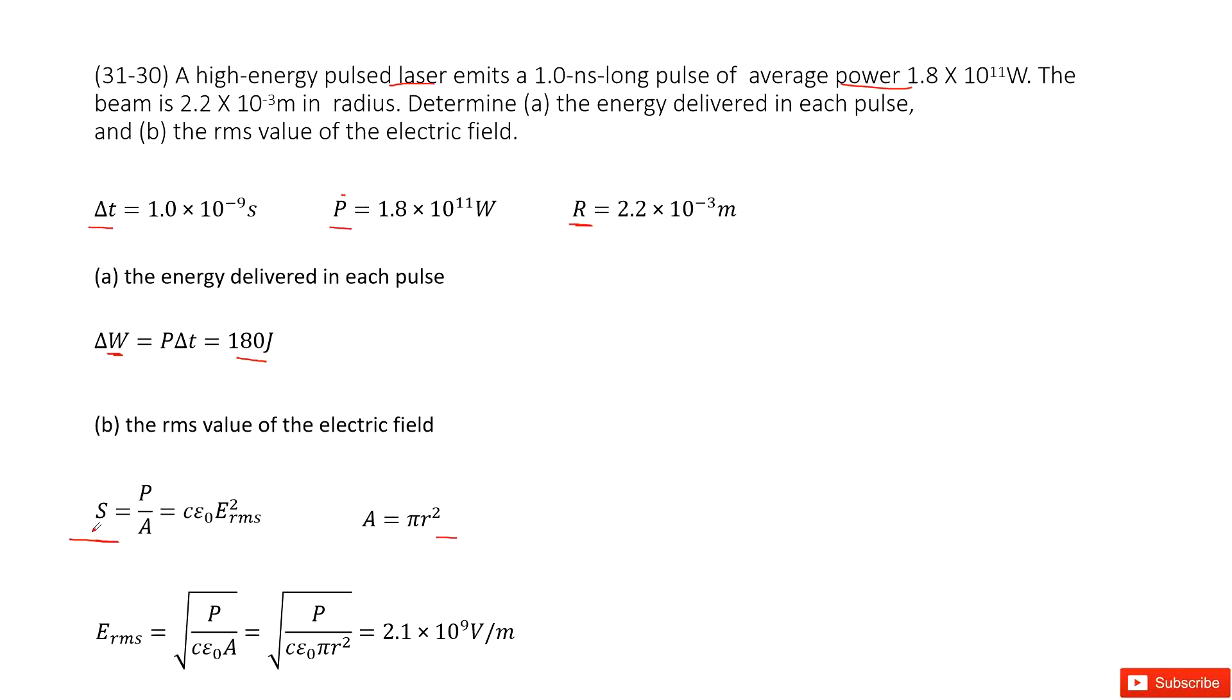This Poynting vector can also be written in equation with the E_RMS. Now, from this equation, you can get the function for E_RMS.